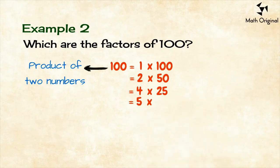Then, we try 5. 100 is divisible by 5 and the product is 100 equals 5 by 20.